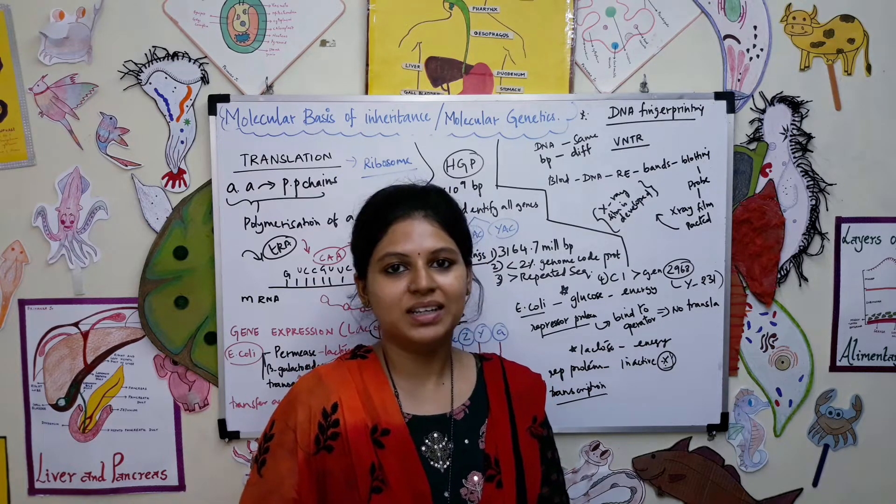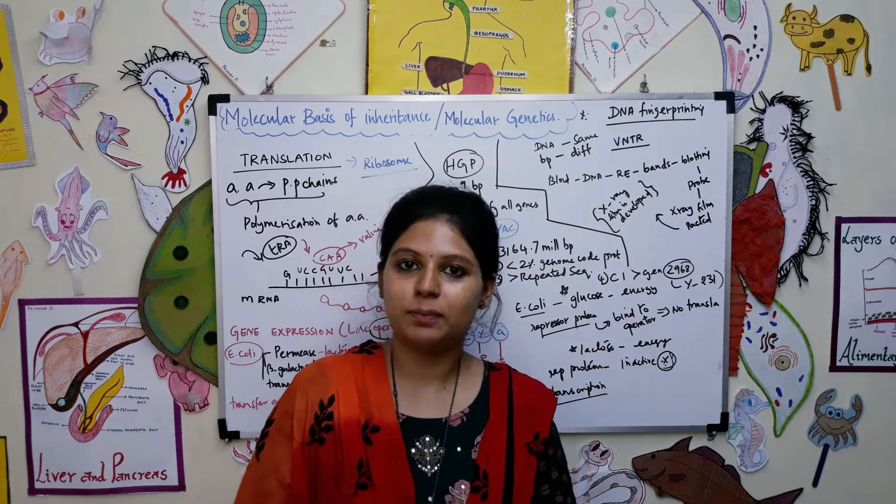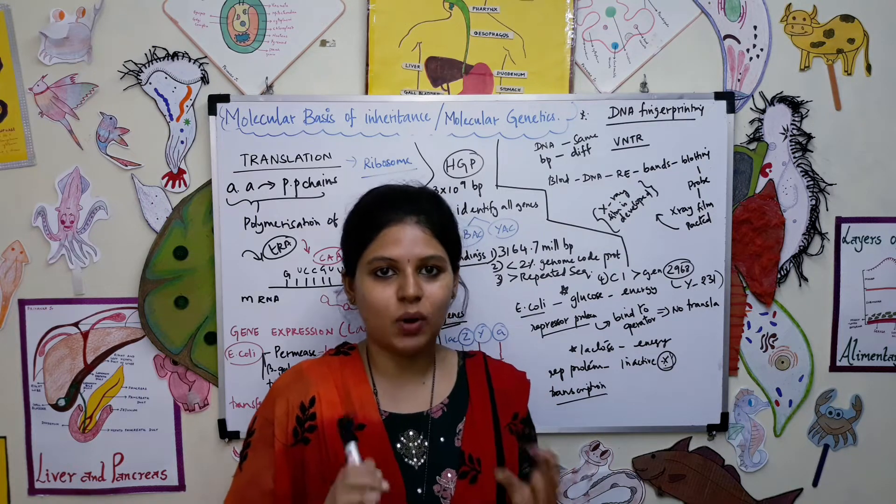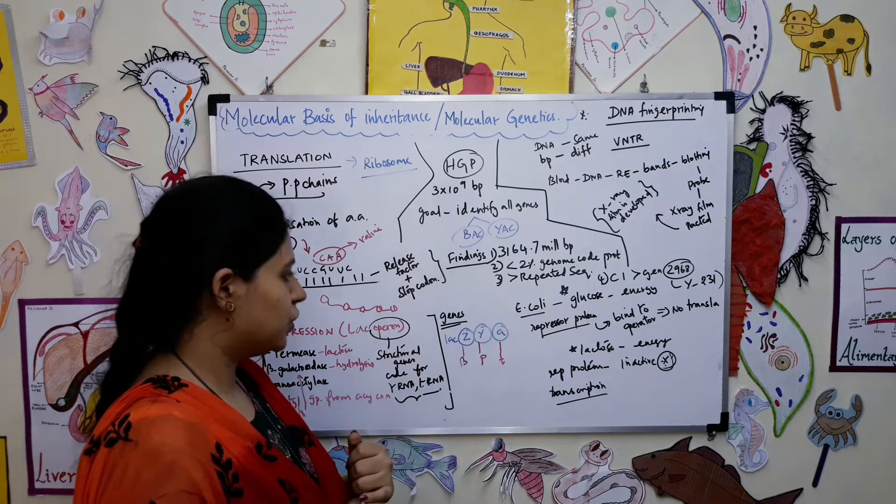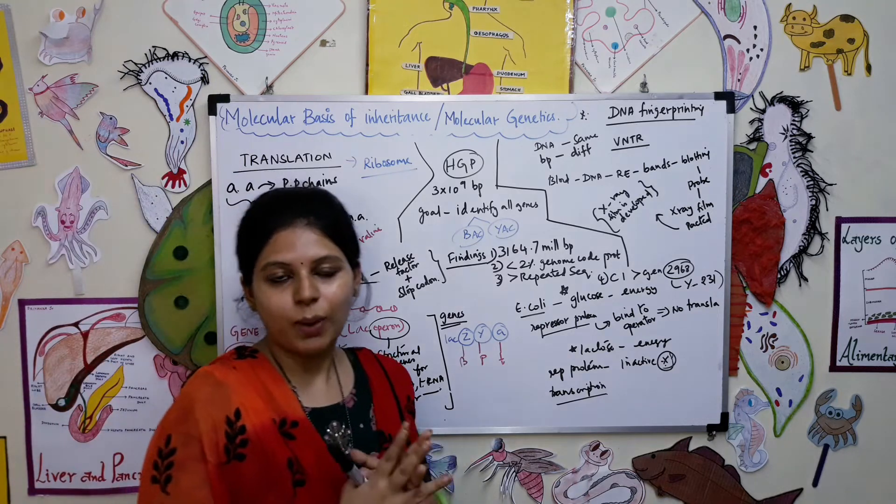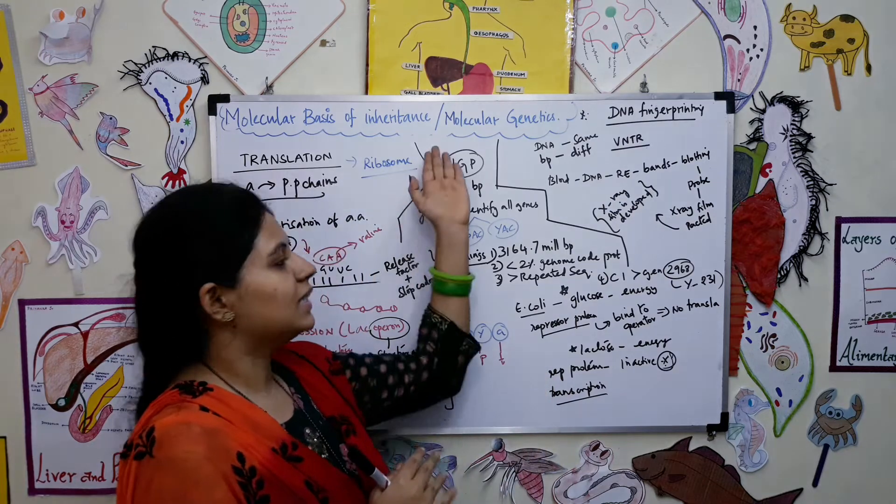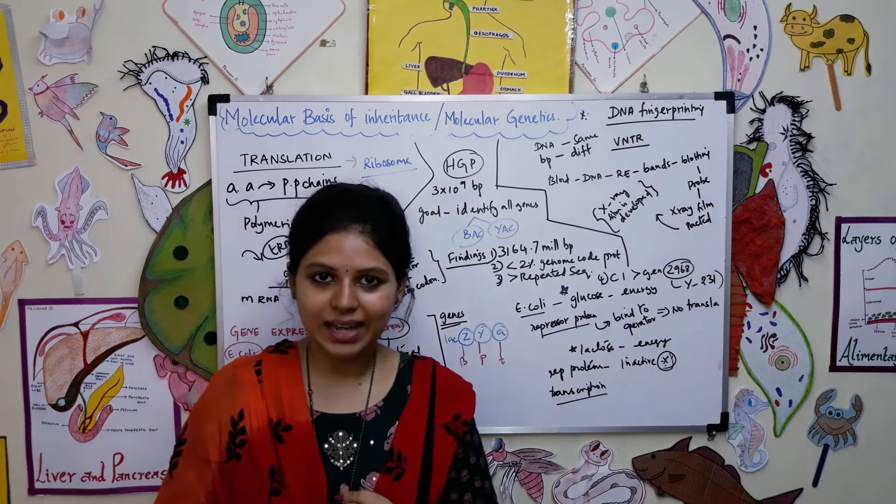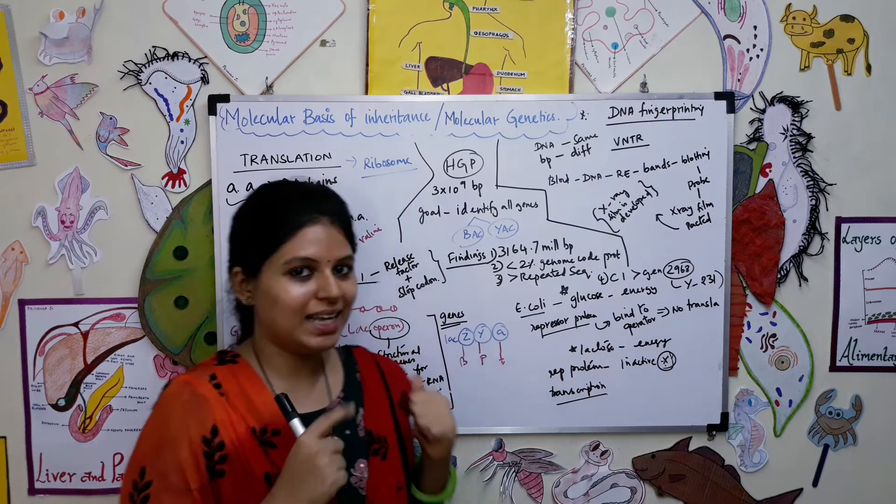We are at the end of the chapter but towards the end we have much more important things. We have to finish only three concepts: translation, human genome project, and then the expression of gene like operon. Once we finish all these three, we have successfully completed the chapter molecular genetics or molecular basis of inheritance.